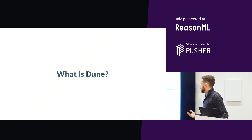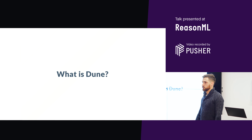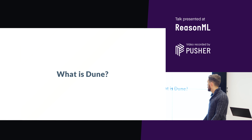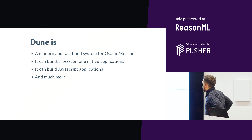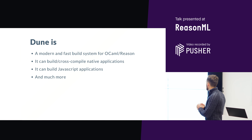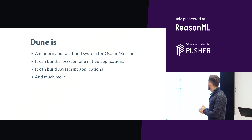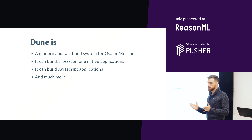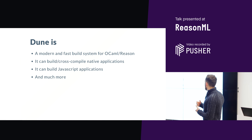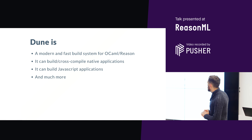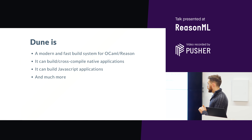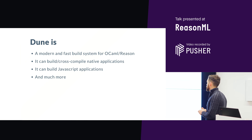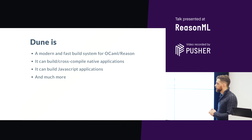Now I'd like to talk a bit more about what Dune is and how you can use it to develop an application. Dune is a modern and fast build system for OCaml or Reason. You can use the OCaml syntax or Reason syntax as you want. It can build native applications, easily cross-compile for various architectures, produce JavaScript applications, and much more.